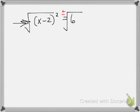So I get x minus 2 because the square and the square root undo each other, plus or minus the square root of 6.